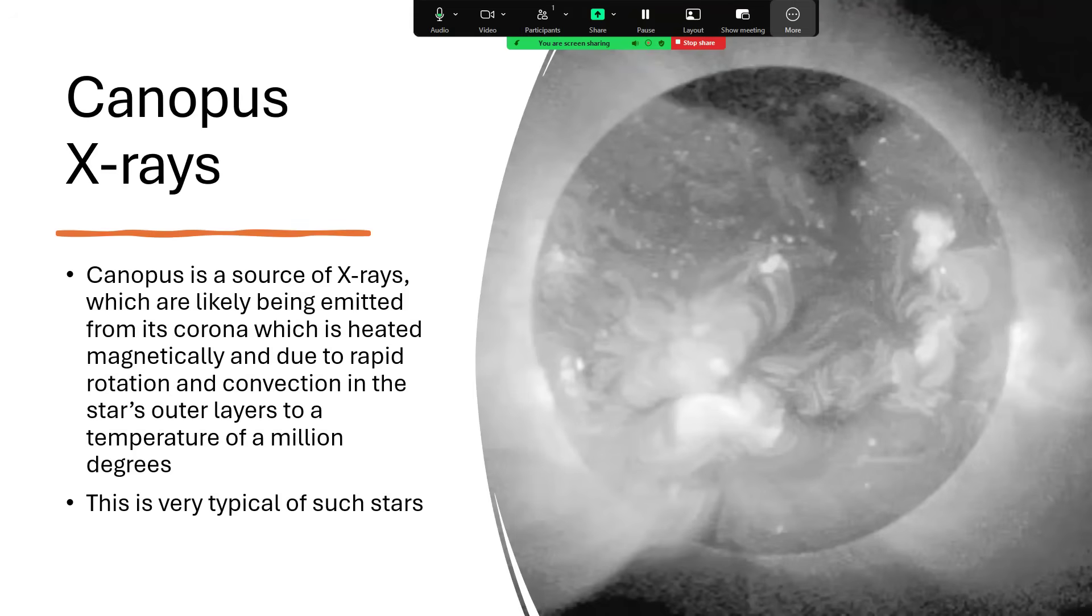Now, at the moment, very typical of these blue loop stars, it is producing quite a significant amount of soft x-rays coming from the corona, the outer envelope, the outer atmosphere of the star, which is heated by the magnetic field and by the rapid rotations and convections going on as all that enormous amount of heat is rising out of the star.